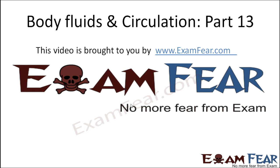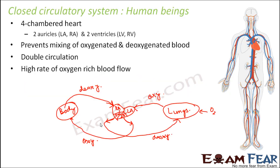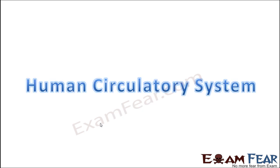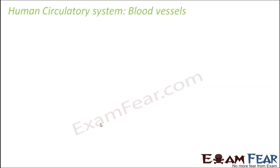Hello friends, this video on body fluids and circulation part 13 is brought to you by examfear.com. The rate of oxygenated blood flow is higher since there is no mixing up. This was a brief introduction about the circulatory system in different animals. Now we will specifically talk about the human circulatory system — the different types of blood vessels, their properties and structure, and the process of circulation in human beings. Let us first talk about the blood vessels.